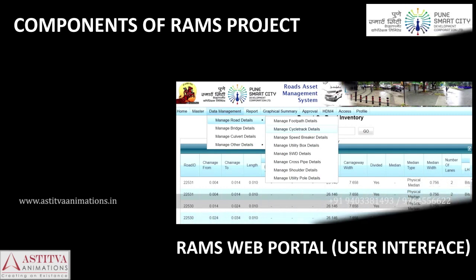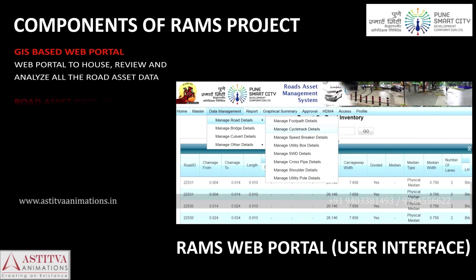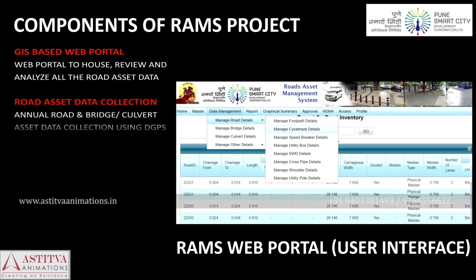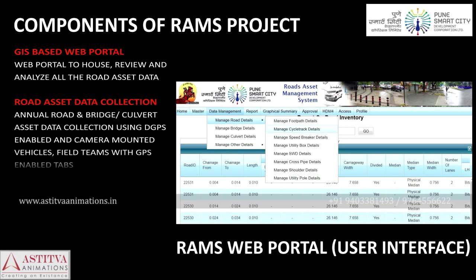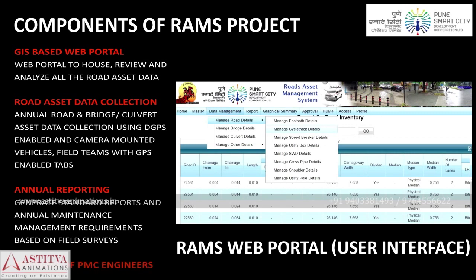The RAMS project is divided into three distinct tasks. Task 1 comprises a GIS-based web portal to store, review, and analyze all road asset data at a single location with the click of a mouse. Task 2 includes annual road asset data collection using a network survey vehicle and field teams, conducted over a period of three years. Task 3 includes generating standard reports, annual maintenance management requirements, and maintaining historical records of road assets. Training of municipal engineers in the use of RAMS forms an important capacity building initiative.